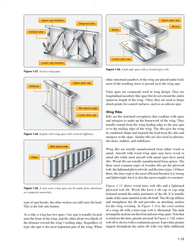As a rule, the wing has two spars. One spar is usually located near the front of the wing, and the other about two-thirds of the distance toward the wing's trailing edge. Regardless of type, the spar is the most important part of the wing. When other structural members of the wing are placed under load, most of the resulting stress is passed on to the wing spar. False spars are commonly used in wing design; they are longitudinal members like spars but do not extend the entire span-wise length of the wing. Often, they are used as hinge attach points for control surfaces, such as an aileron spar.